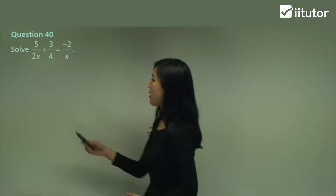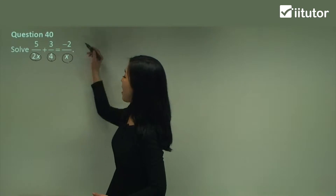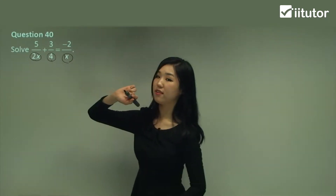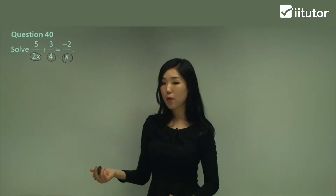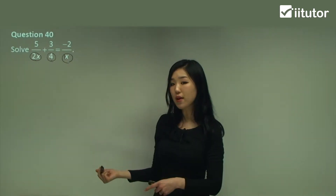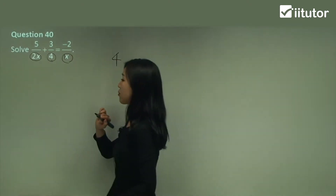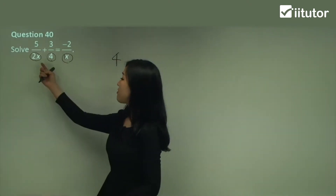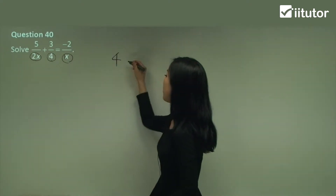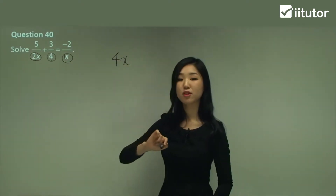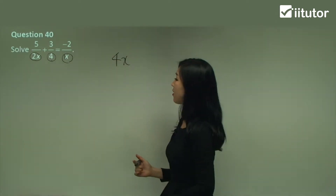Question 40. We have 2x, 4, and x as denominators. Remember, this is just 1x. So the numbers are 2, 4, and 1. What's the lowest common multiple of 2, 4, and 1? It's just going to be 4. But what are the extra pronumerals that we have? We have x — and we also have x here — but if they are the same, you just need to multiply one of them. So you don't have to multiply by x times x; you just need 1x.